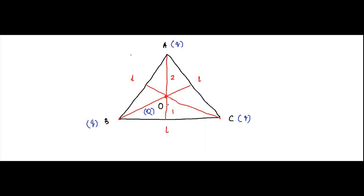It has been asked: what is the force on this charge Q? Capital Q will experience three forces because of its interaction with the small q charges placed at A, B, and C. The force due to the interaction of capital Q with charge at A will be equal to (1 / 4πε₀) · (Q · q) / OA², so we need to determine OA.